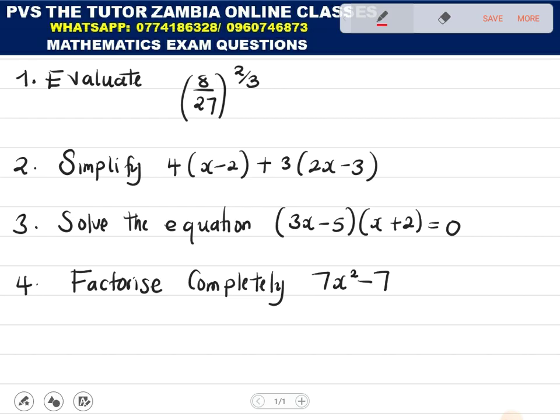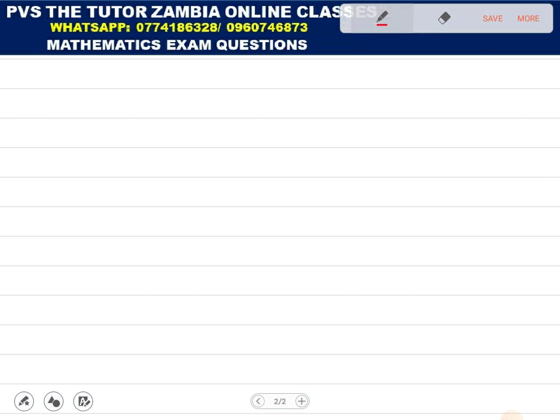Question 1 says evaluate 8 over 27 everything raised to the power 2 over 3. What we are going to do here is express 8 and 27 as a base of 3. In short, which number can we raise to the power 3 to give us 8 and which number can you raise to the power 3 to give us 27? The number that we can raise to the power 3 to give us 8 is 2 to the power 3 over the number that we can raise to the power 3 to give us 27 is 3 to the power 3.